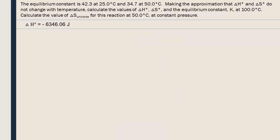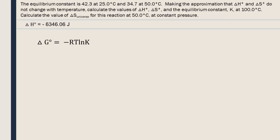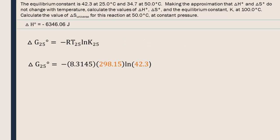To calculate delta S, we will use the free enthalpy equation. But first, we need standard delta G. We will use the following formula to calculate standard delta G at 25 degrees Celsius. Delta G at 25 degrees Celsius is negative 9,283.21 joules. This value will be placed at the top because it will be used again.